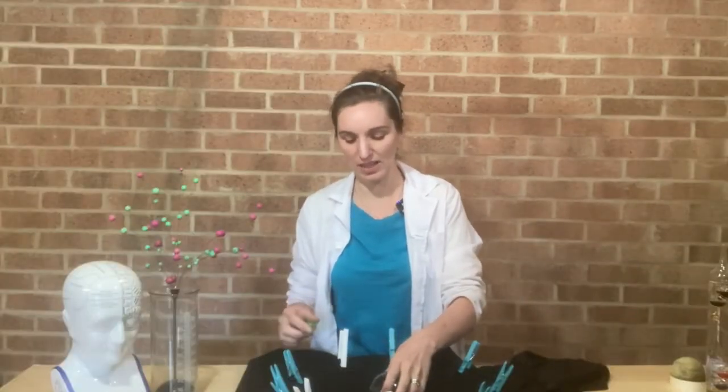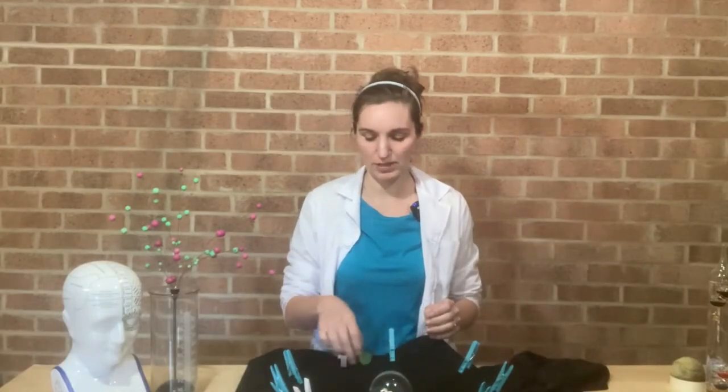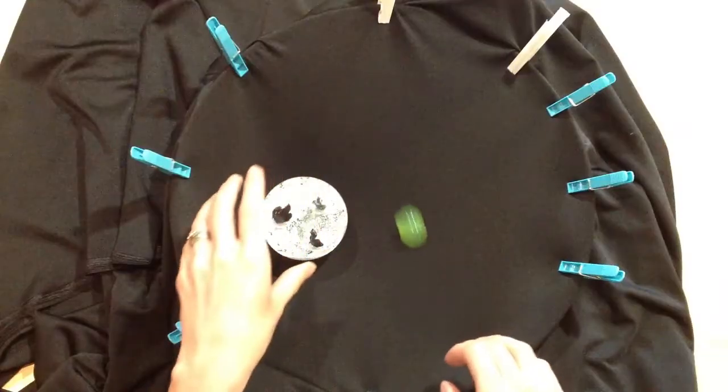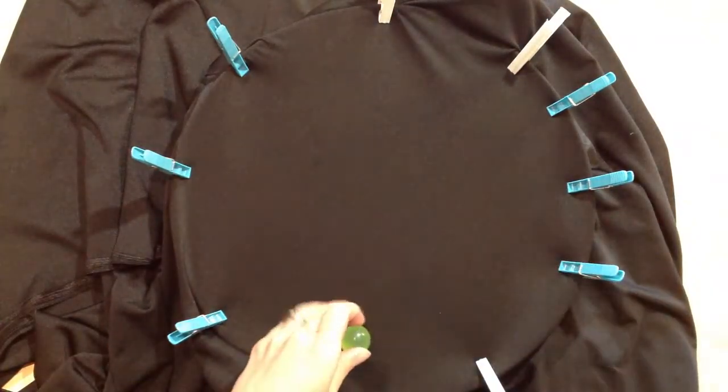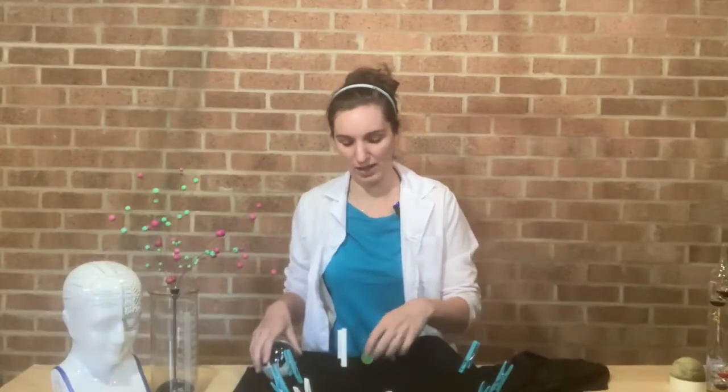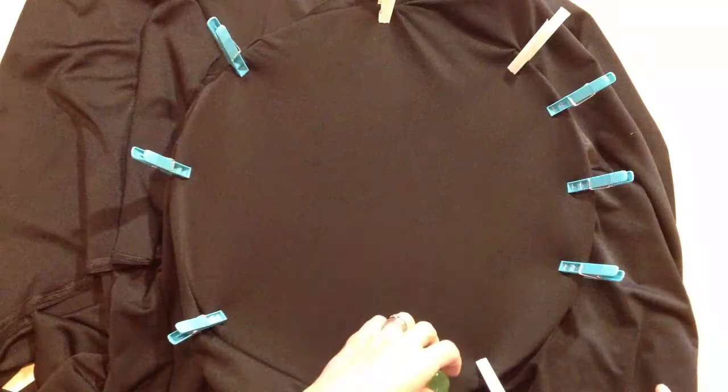So if you imagine this is the earth and you've got a meteor flying near it, you can see how the path changes. Whereas without the object there, it will just go in a straight line.